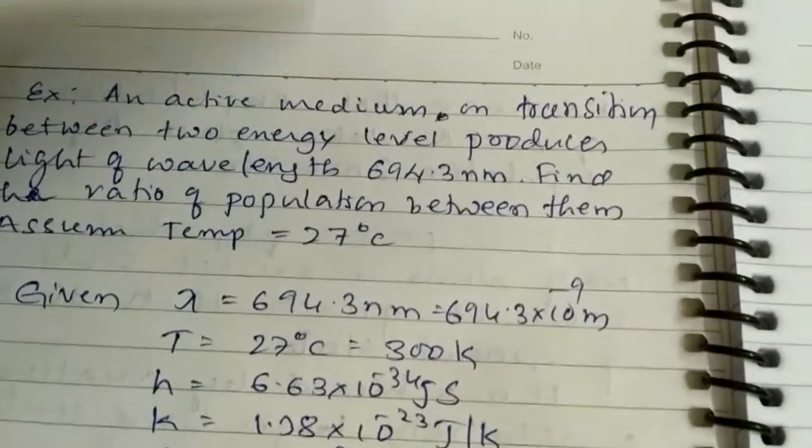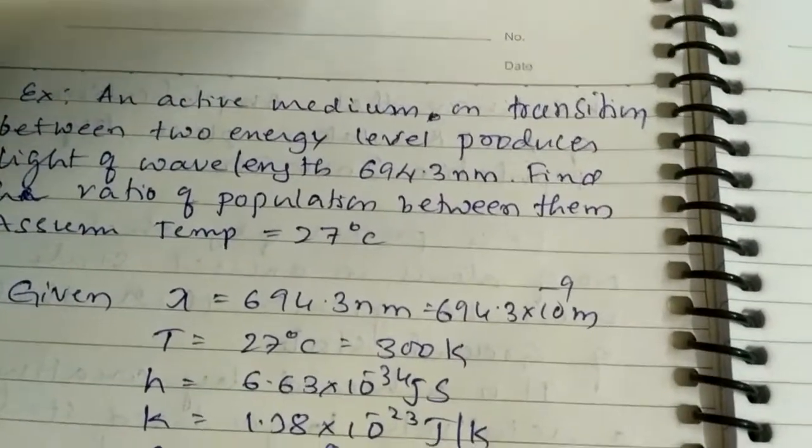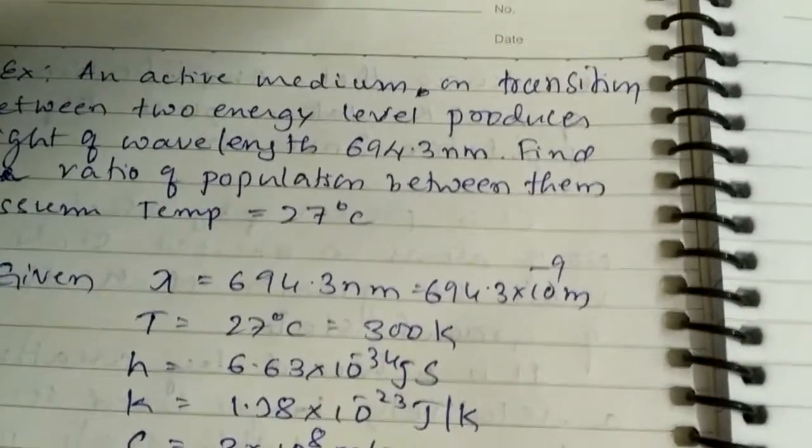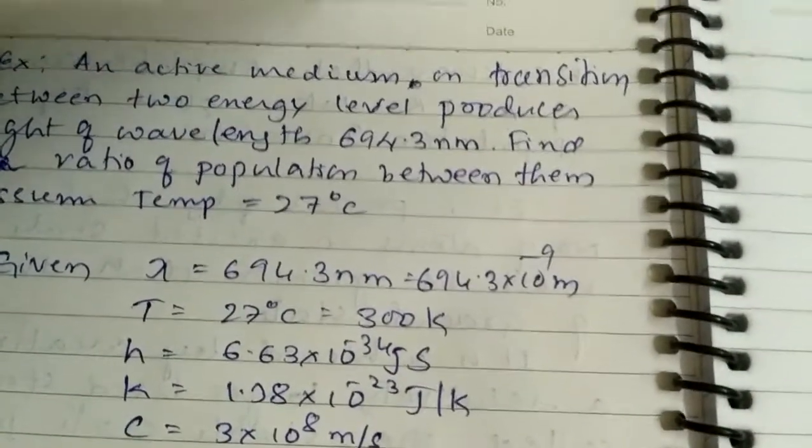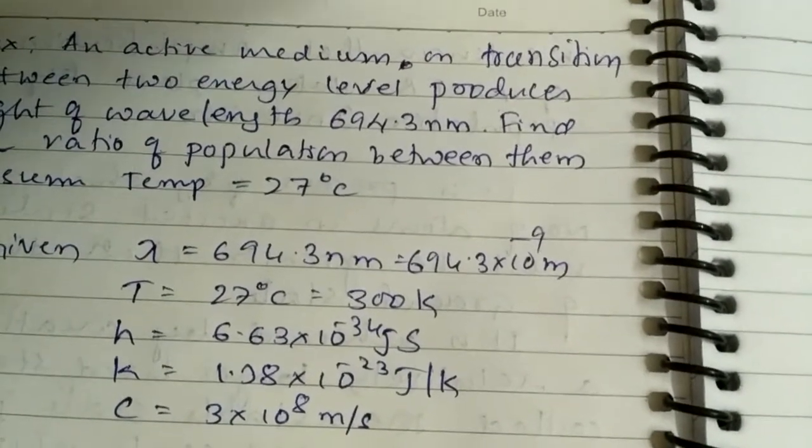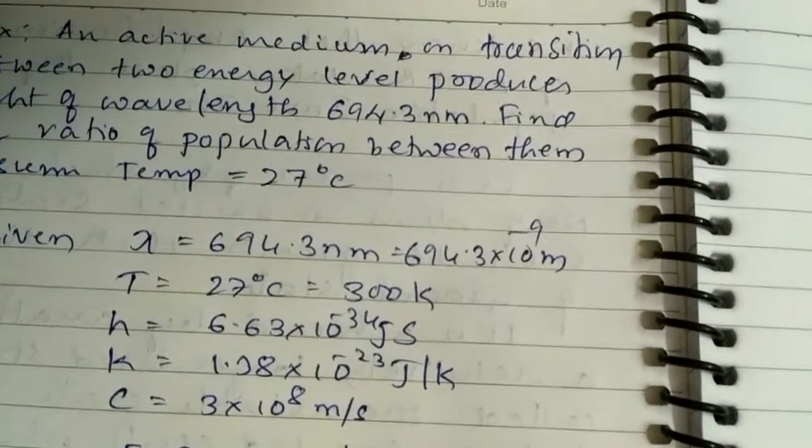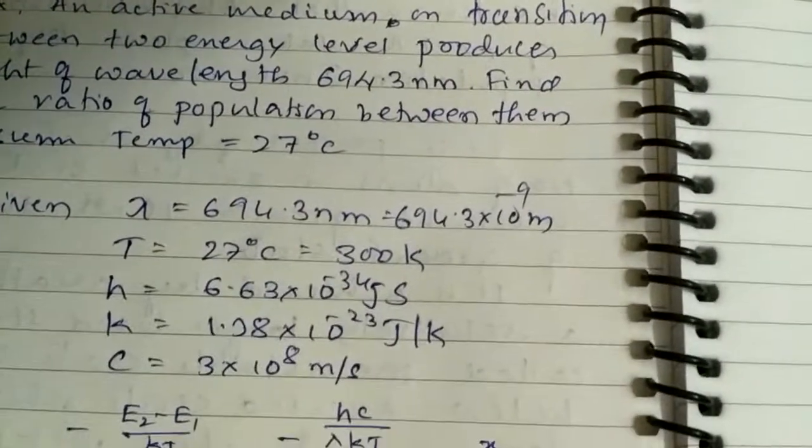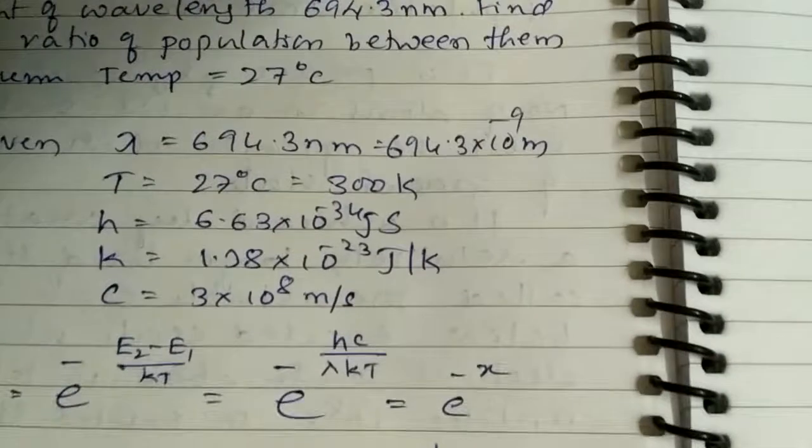An active medium undergoing transition between two energy levels produces light of wavelength 694.3 nanometers. Find the ratio of population between them, assuming a temperature of 27 degrees Celsius.